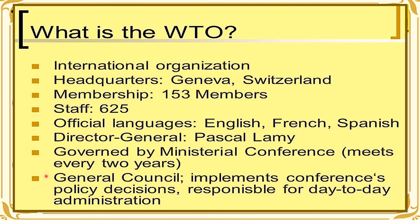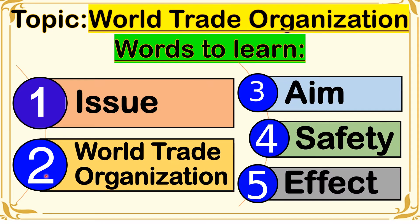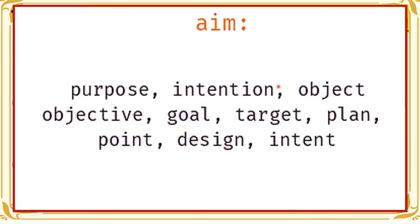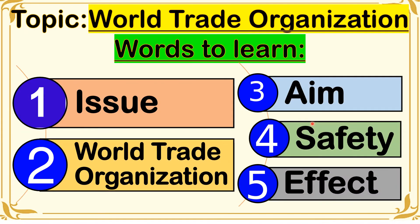General Counsel means implementing conference policy decisions and is responsible for day-to-day administration. The next word is aim. Aim means the purpose, intention, objective, goal, target, plan, and intent. So when you say aim, it means the purpose or the reason why there is a World Trade Organization.